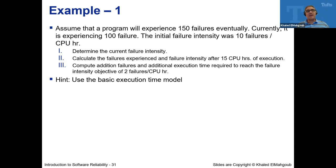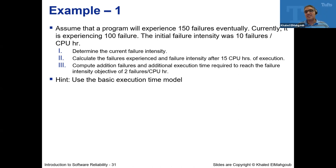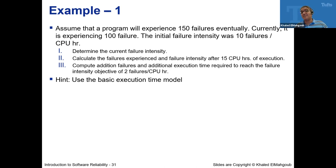Assume you have a program that will experience 150 failures eventually — meaning after infinite execution time I don't want more than 150 failures. Currently it has experienced 100 failures. The initial failure intensity is 10 failures per CPU hour. So every one CPU hour you are getting 10 failures — that's your initial failure intensity.